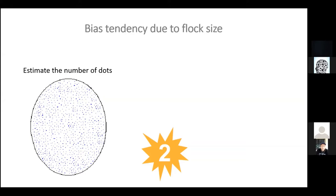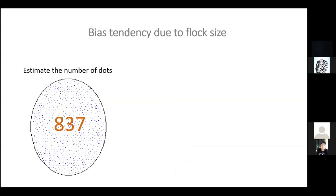We have quite a bit of variance, but the most people estimated between 900 and 1,000 birds. So there are 837 dots — we had an overestimate here. Although there is a tendency to underestimate numbers in large groups, I've found that people tend to overestimate a bit when looking at things on a screen. But people were pretty close — 900 to 1,000 is pretty close. Great job.